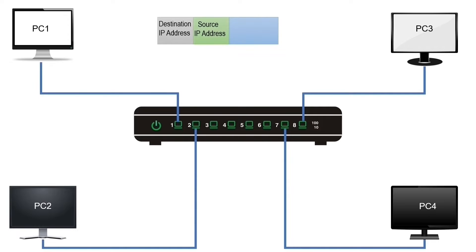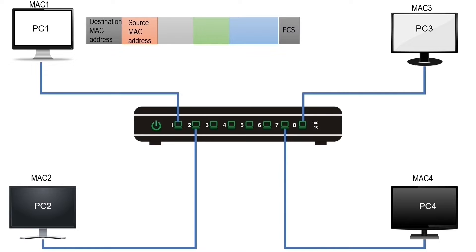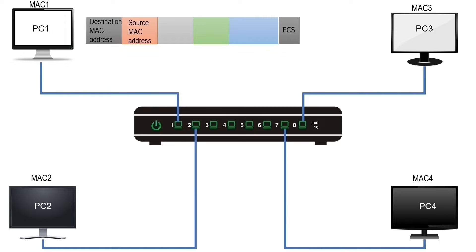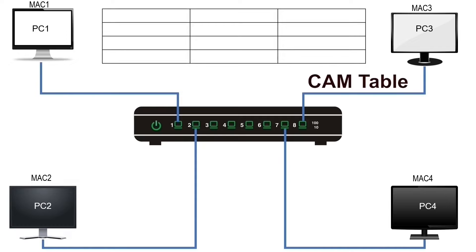The device first adds software addresses, also known as IP addresses. A segment with IP addresses is known as a packet. After adding software addresses, the device attaches hardware addresses, also known as MAC addresses. A packet with MAC addresses is known as a frame. A switch understands and uses only hardware addresses to process frames. When it receives a frame, it reads the source MAC address and destination MAC address. The CAM table has three fields: MAC address, port, and aging.